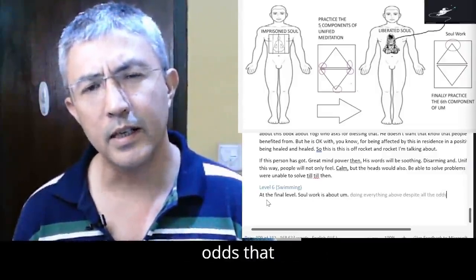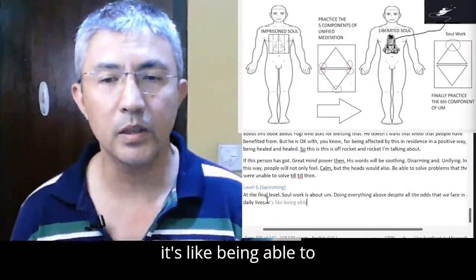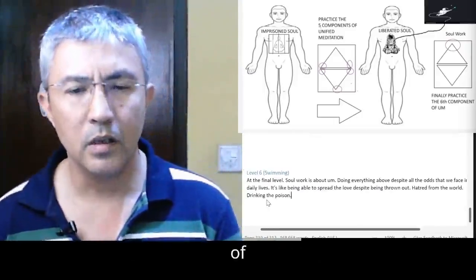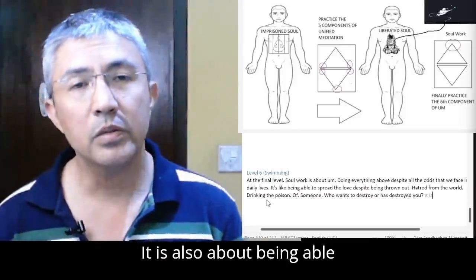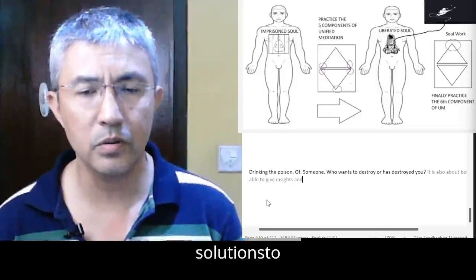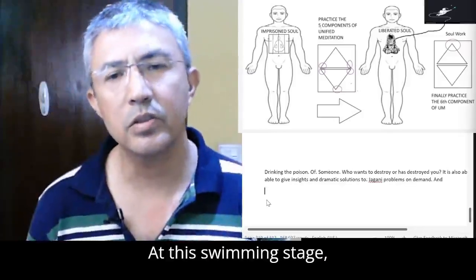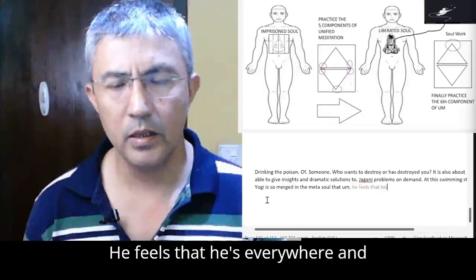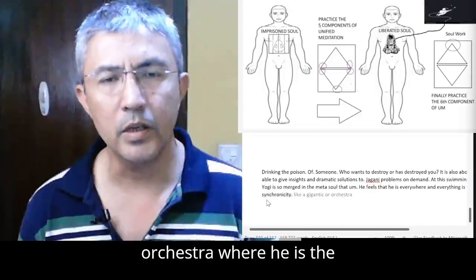At the final level, soul work is about doing everything above despite all the odds that we face in our daily lives. It's like being able to spread the love despite being thrown out, that hatred from the world, drinking the poison of someone who wants to destroy or has destroyed you. It is also about being able to give insights and dramatic solutions to gigantic problems. It is on demand. At this swimming stage, the yogi is so merged in the meta soul that he feels that he's everywhere and everything is working in a synchronicity like a gigantic orchestra where he is the maestro.